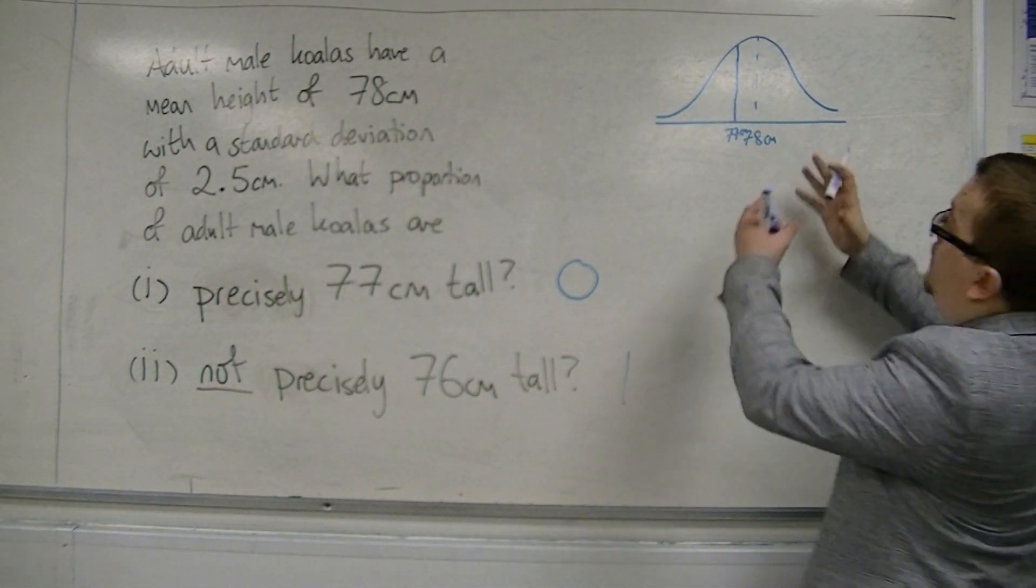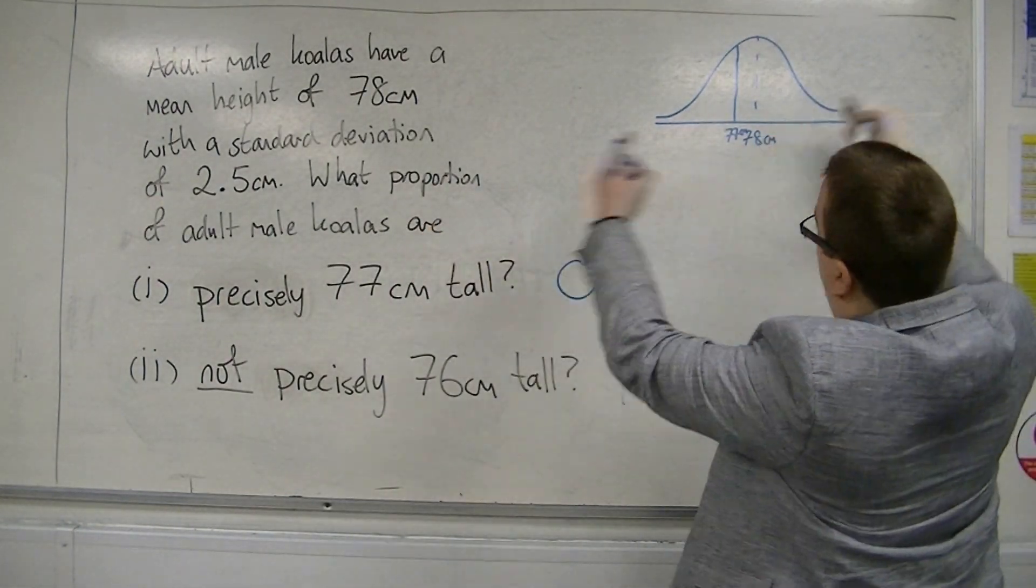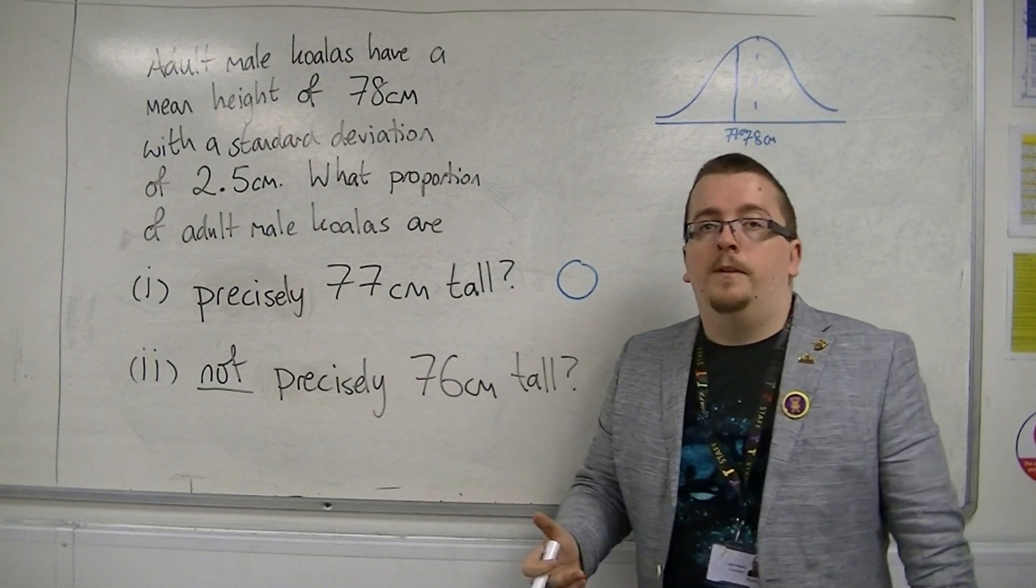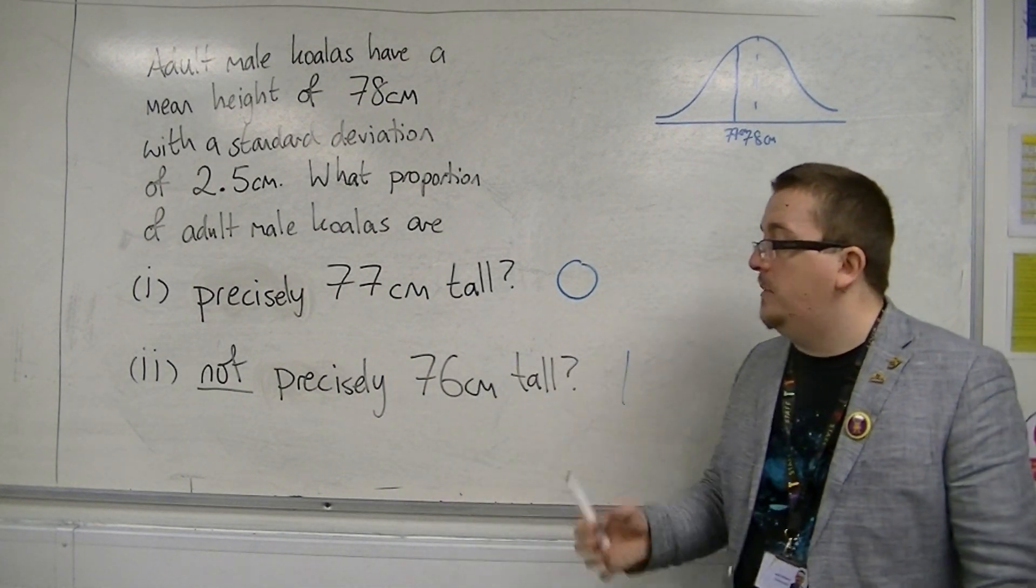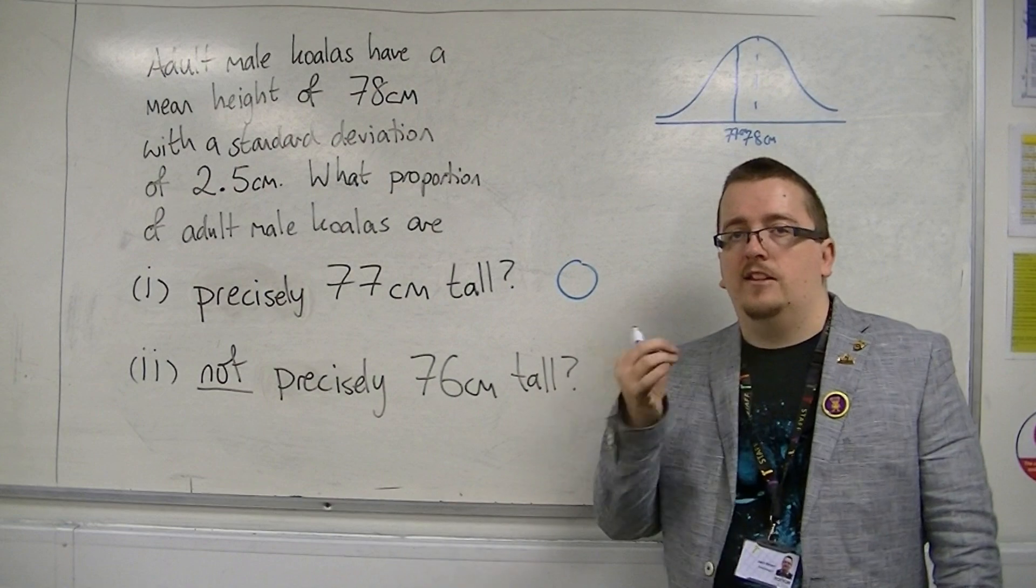Okay? So that would be the whole probability distribution. Because the likelihood of finding one that is 76 centimeters tall exactly is going to be zero.